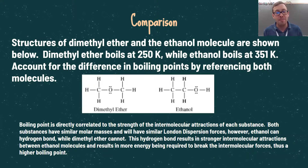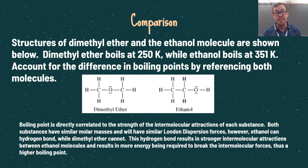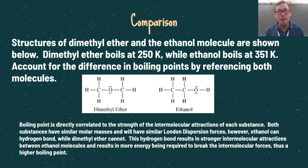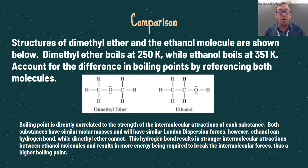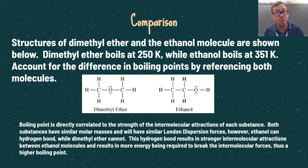Both substances have similar molar masses and will have similar London dispersion forces. However, ethanol can hydrogen bond while dimethyl ether cannot. This hydrogen bonding results in stronger intermolecular attractions between ethanol molecules and requires more energy to break those intermolecular forces, resulting in a higher boiling point. When doing these comparisons, it's important to explain things in enough detail — explain all intermolecular forces present and how the difference between them directly correlates to a difference in boiling points.